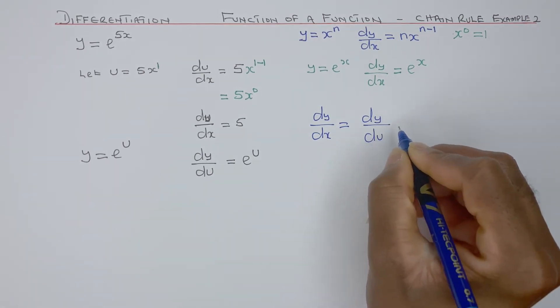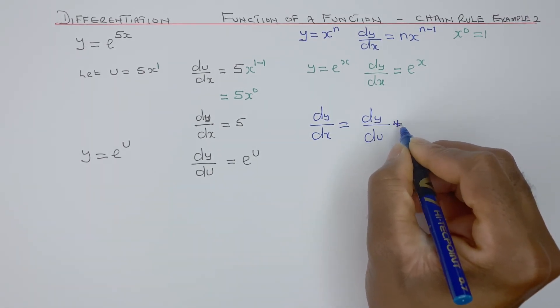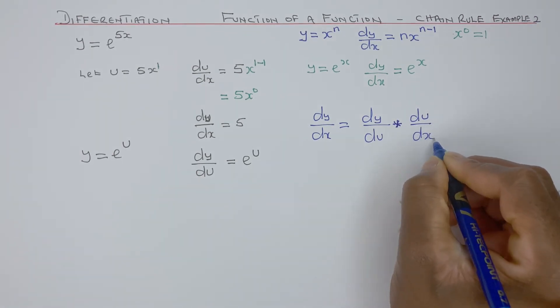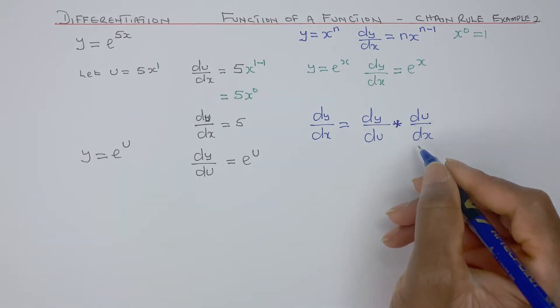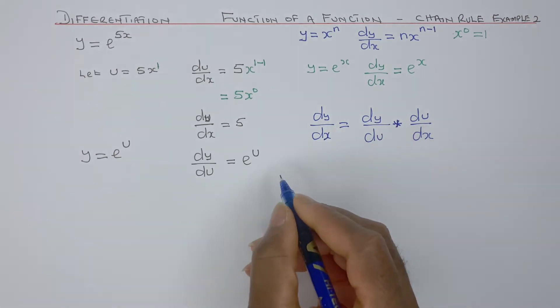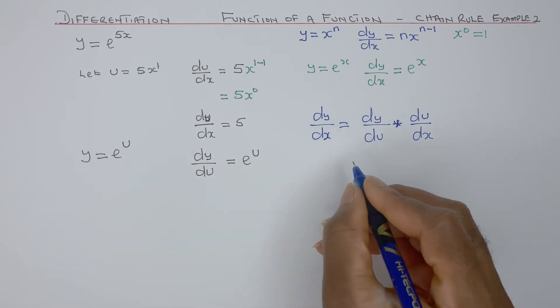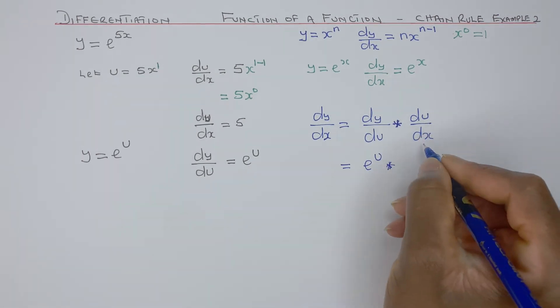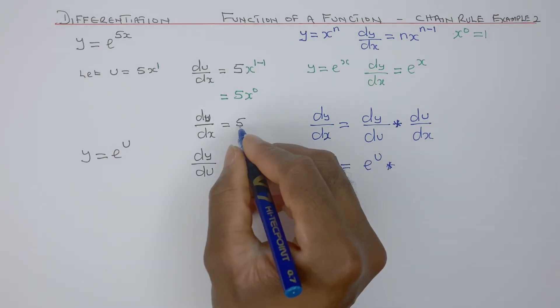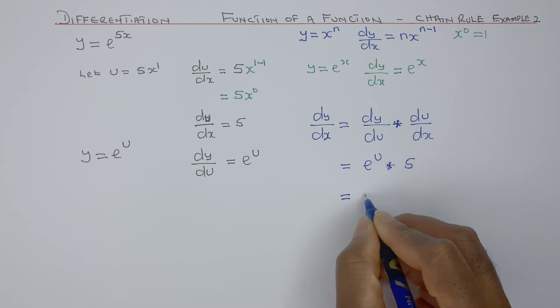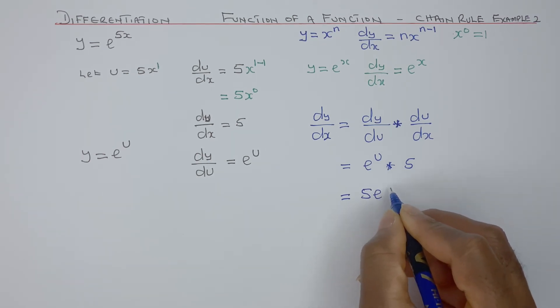So dy/dx equals dy/du times du/dx. You can see that the u's cancel out. Therefore, I can replace dy/du—dy/du is e to the power of u—times du/dx, and du/dx is 5. So that equals 5e to the power of u.